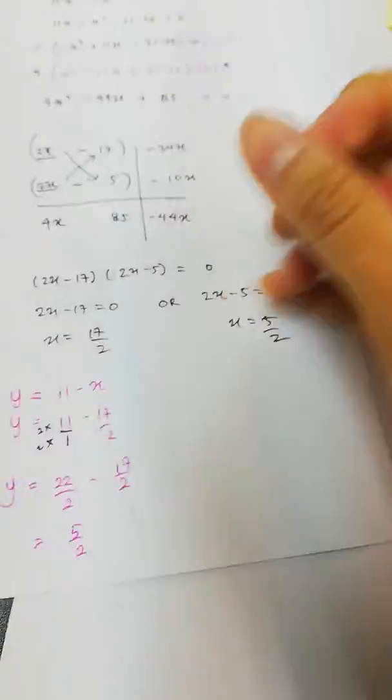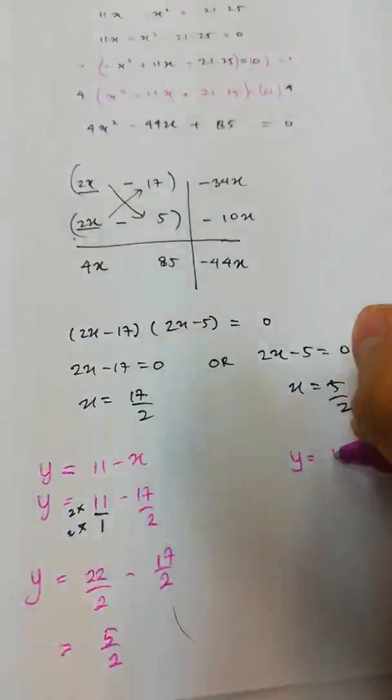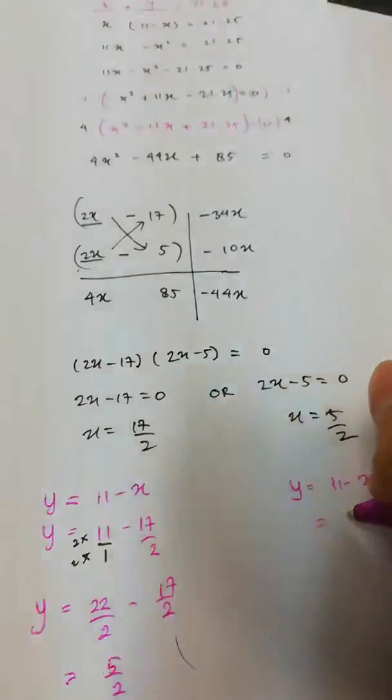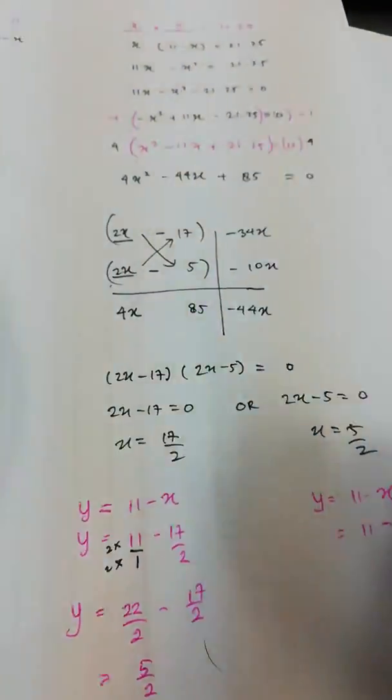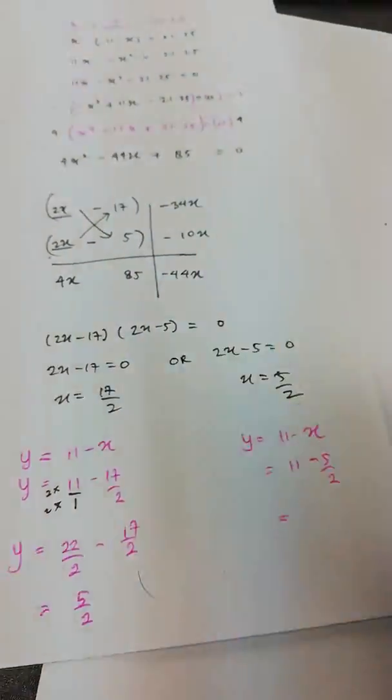So 5 over 2. And therefore, this one is minus 5 over 2. So do the same way.